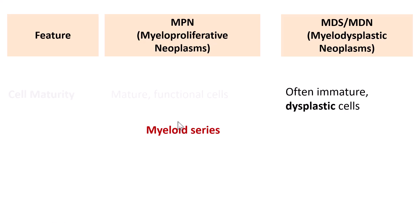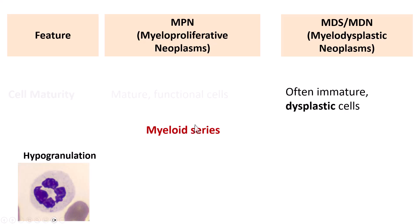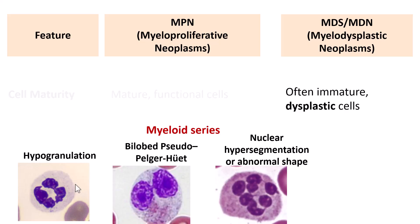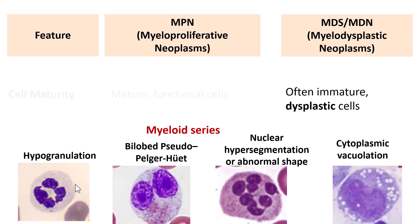In the myeloid series, the most important dysplastic feature is hypogranulation — absolutely no granules in the myeloid precursors. Other features include bilobed cells (pseudo-Pelger-Huet anomaly), nuclear hypersegmentation similar to megaloblastic anemia, abnormal nuclear shapes, and cytoplasmic vacuolation. All these are dysplastic findings in the myeloid series.